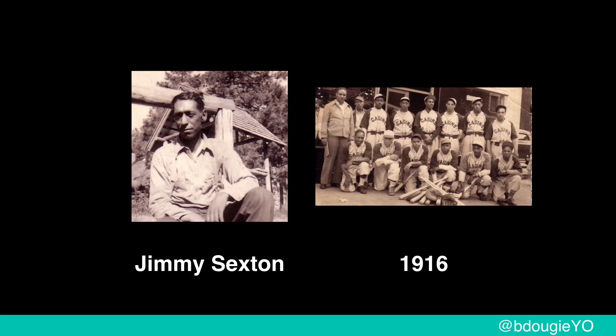Those are the two teams. Baseball has been here for a long time, so people actually care about it. I also found that the Oakland Oaks had the first Black baseball player ever to play in an actual proper baseball game. His name was Jimmy Sexton. He was Canadian and they tried to pass him off as Native American. He only lasted two games, and then they found out he was actually of African descent, so he wasn't allowed to play.